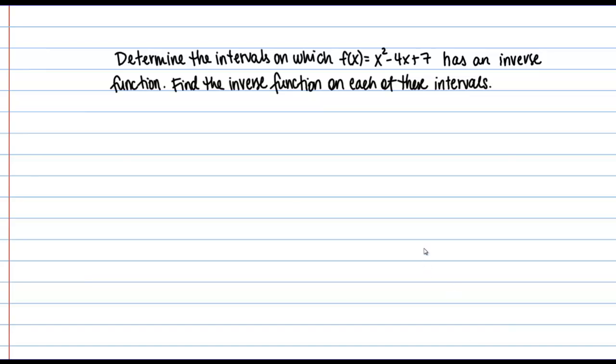We're instructed to determine the intervals on which f(x) = x² − 4x + 7 has an inverse function, and then define the inverse function on each of these intervals. I'm going to start by showing you a graph of this function, x² − 4x + 7.